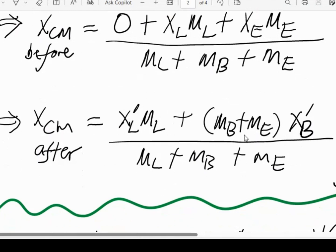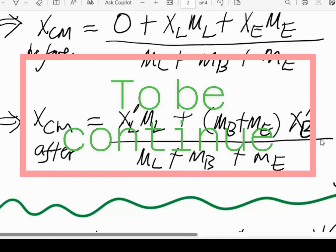Plus the new position for both Burr and Ernie, assuming they're going to be at the same place. So the mass of Burr plus the mass of Ernie, and the whole thing divided by the total mass.